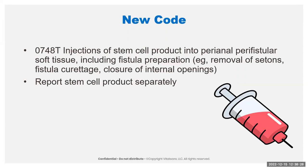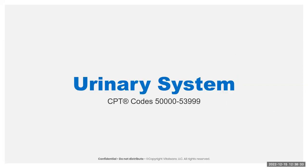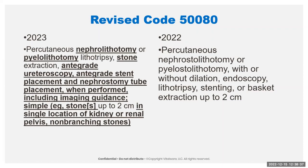Moving to the urinary system, there aren't a ton of changes — but there are some important changes to codes 50080 and 50081. Here's the new description for 50080: this is now just for a nephrolithotomy or a pyelolithotomy through the antegrade approach, with stent placement when performed. It does include your imaging guidance. What's important to note is that they have changed and called this a 'simple' extraction.